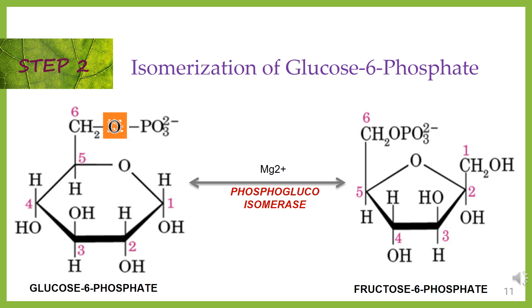Step 2: isomerization of glucose-6-phosphate. Glucose-6-phosphate is isomerized into fructose-6-phosphate by the enzyme phosphoglucoisomerase. Isomers are molecules which have the same molecular formula but differ in structure.